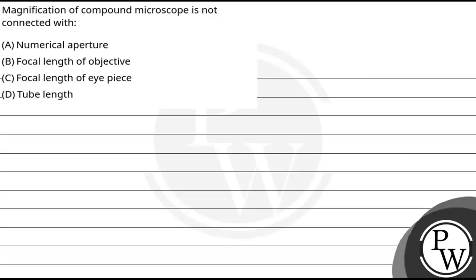Hello, let's read the question. In this question, we have said that magnification of compound microscope is not connected with — we have to tell you. The options are: A. Numerical aperture, B. Focal length of objective, C. Focal length of eye piece, D. Tube length.